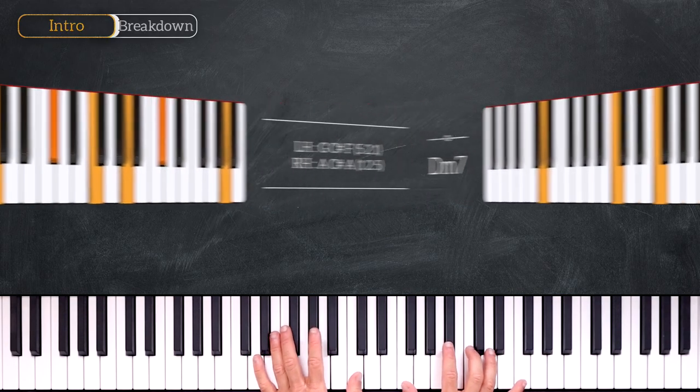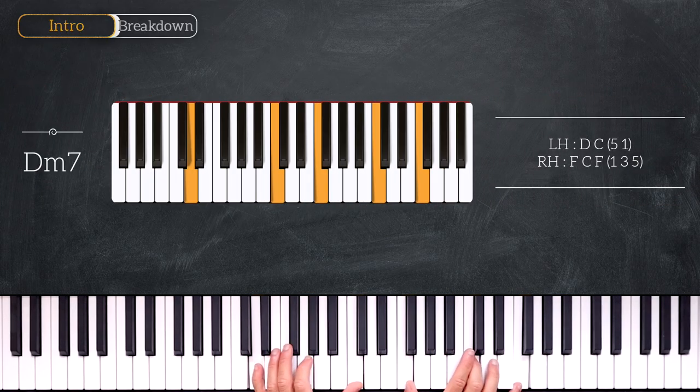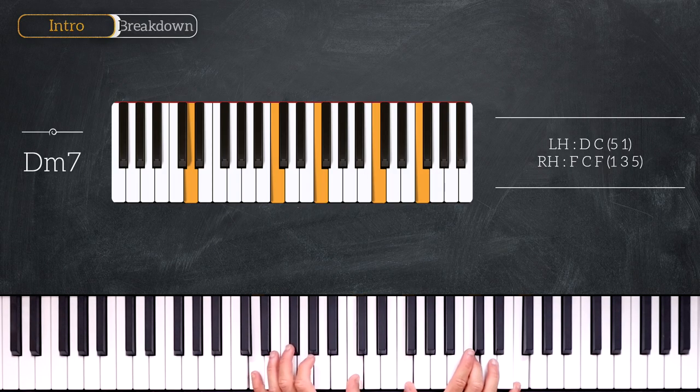Then we'll play this D minor 7 chord. Playing D and C on the left and F, C, F on the right.